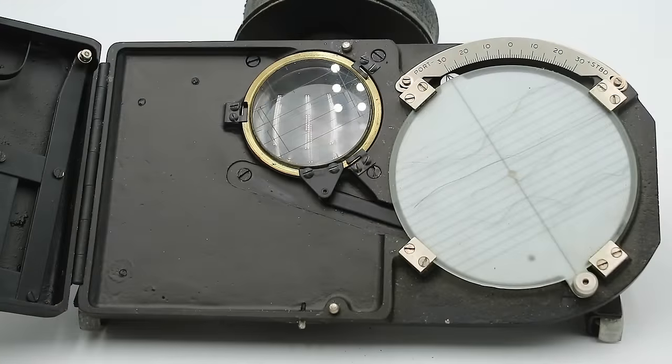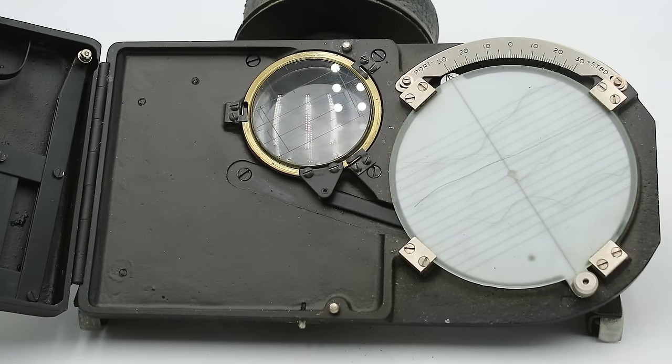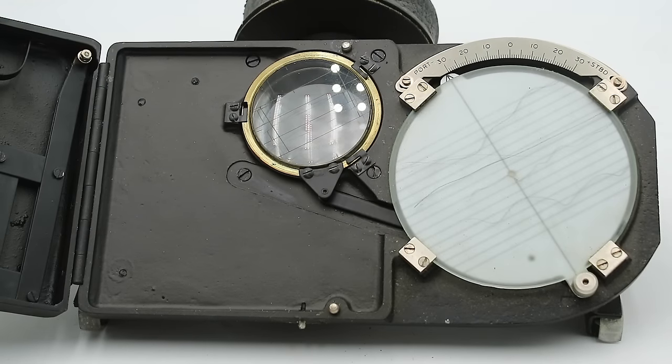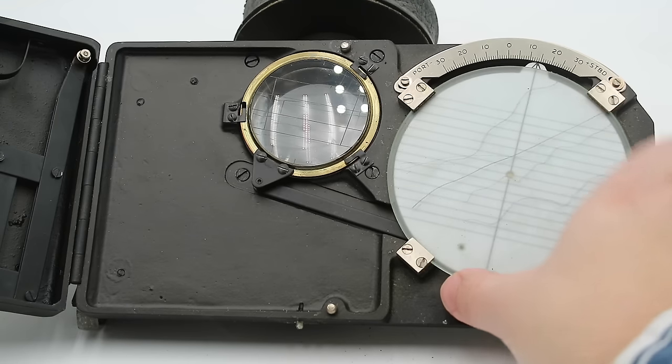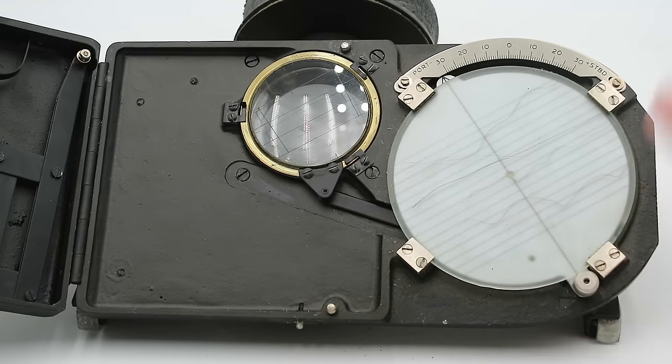We have a lens with a reticle and this reticle consists of four parallel drift lines and two ground speed lines. This lens is mechanically linked with the frosted glass disc so that if you rotate one the other rotates along with it.